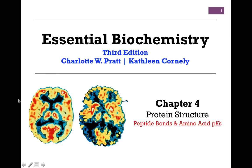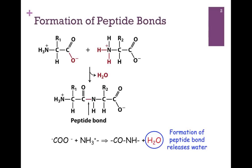We're continuing our studies of protein structure in Chapter 4. In this lesson, we'll be looking at peptide bonds and amino acid PKs and how they relate to the overall charge on the molecule. First, we notice that in order to form a peptide bond, we're going to join together the alpha carboxy group of one amino acid with the alpha amine group of a second amino acid.